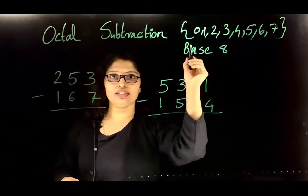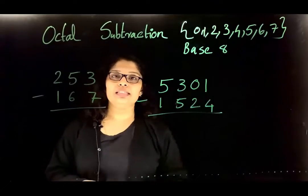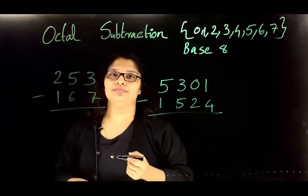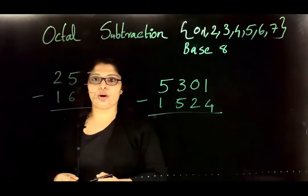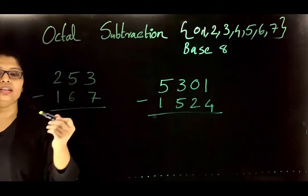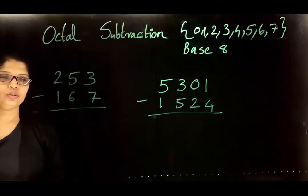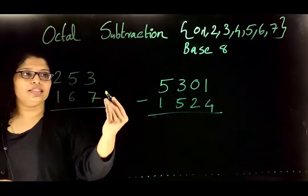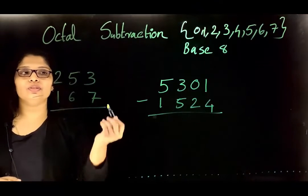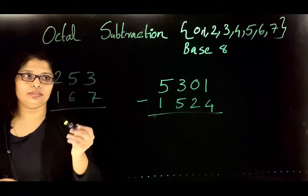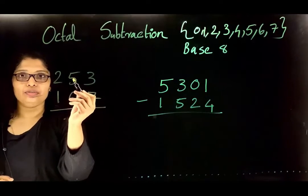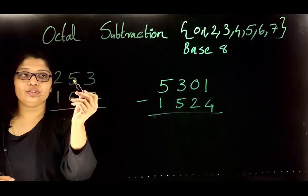Next is octal subtraction. In octal system we have eight different symbols: 0, 1, 2, 3, up to 7, and this is the base 8 system. Consider this case: 253 minus 167. Subtracting from the LSB position, 3 minus 7 is not directly possible, so we need to borrow from the neighbor. The neighbor has value 5, which is not equal to 0, so we can borrow from this location.